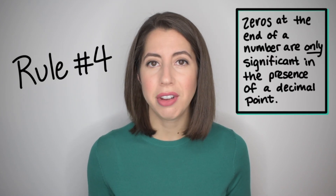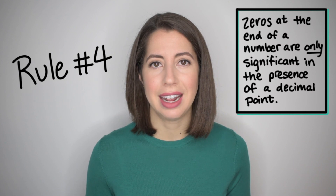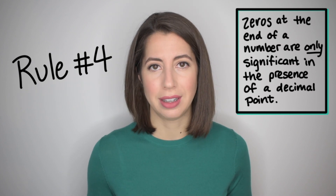Rule number four: zeros at the end of a number are only significant in the presence of a decimal point. The number 100 only has one significant figure. The number 1.00 has three significant figures because there is a decimal point. And finally, the number 100 with a decimal point at the end has three significant figures. That decimal point makes those final zeros significant.